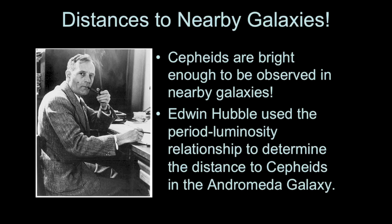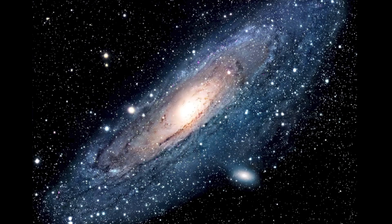Edwin Hubble used this period-luminosity correlation to figure out the distance to the Andromeda galaxy. What he found was that Andromeda was several million light years away — too far away to be inside the Milky Way. This was the first time an astronomer had determined that our Milky Way wasn't the entire universe. Here is a real photograph of the Andromeda galaxy; Hubble determined it was over two million light years away, and today we know it's two and a half million light years from us.